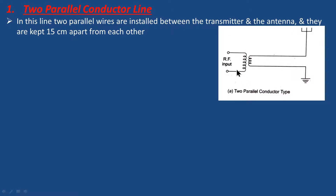This is the RF input. This is the transmitter output. This is the required antenna. That is the two parallel conductor line.